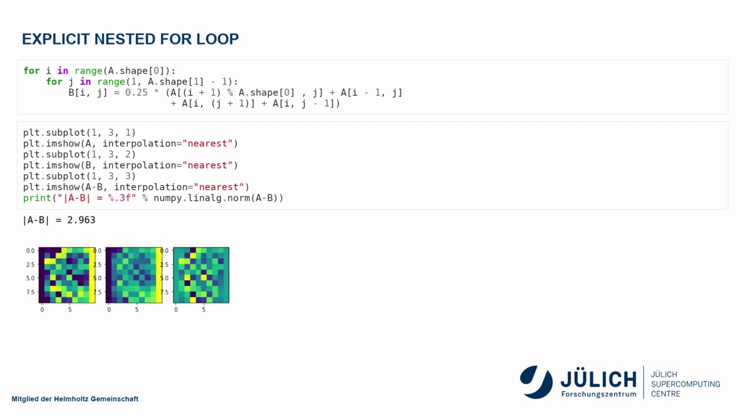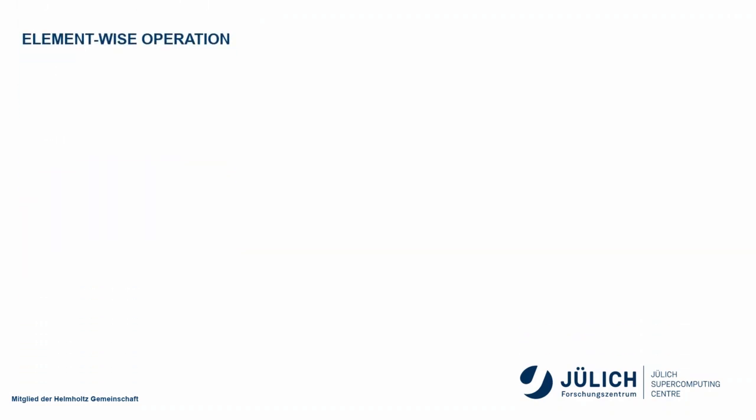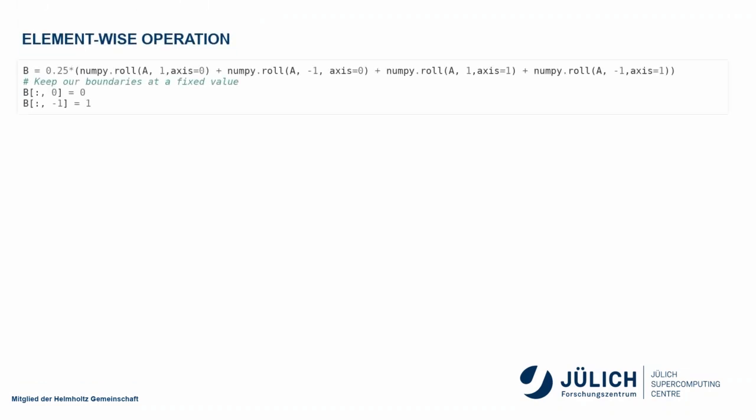This would be with an explicit loop, but as I said, this is about thinking in a vectorized way. We don't want to use explicit loops; we want to apply this to all the elements at once. We can do that using numpy roll.